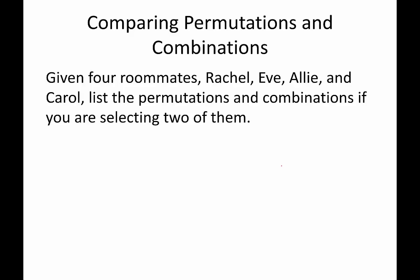Before we get into combinations, let's compare the difference between permutations and combinations. If we're given four roommates and we want to list the permutations and combinations when selecting two of them — for permutations, you might recall the formula: 4 permute 2 would be 4 factorial divided by (4 minus 2) factorial, which is 4 factorial over 2 factorial, giving us 4 times 3 times 2 factorial over 2 factorial, which equals 12 permutations. For permutations, order does matter.